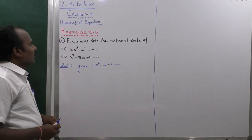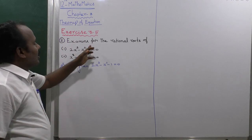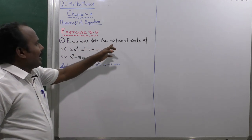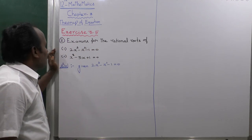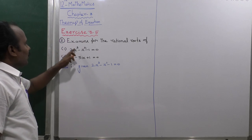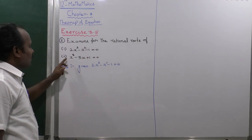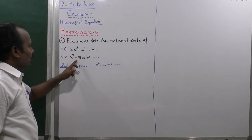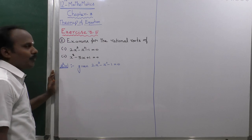X is 3.5. Examining for the rational root of the sum. The first equation is 2x³ minus x² minus 1 equals 0. The second one is x⁸ minus 3x plus 1 equals 0.